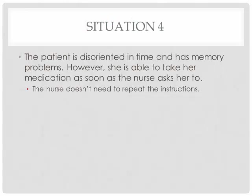In this last video, the patient is clearly disoriented in time and has memory problems. However, she's able to take her medication as soon as the nurse asked her to, so the nurse doesn't need to repeat the instructions. What we wanted to show you is an example of a patient with dementia — for instance, Alzheimer's disease. With Alzheimer's patients, they can have significant memory problems and be disoriented, but they still have the capacity to follow instructions, as shown in this video.